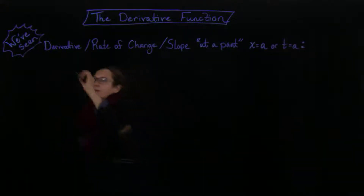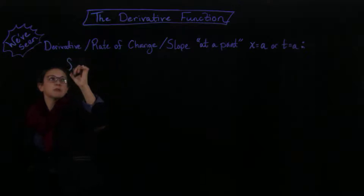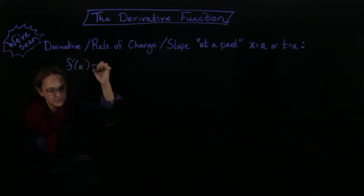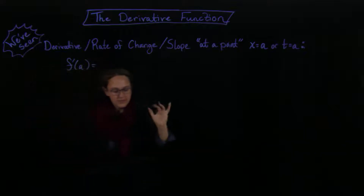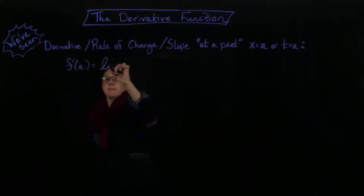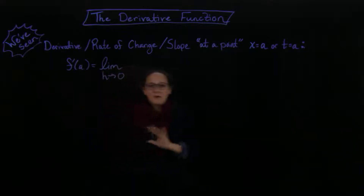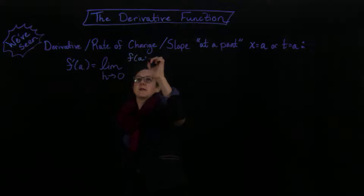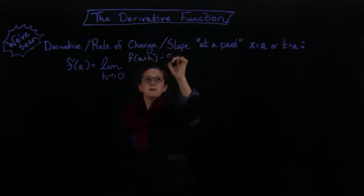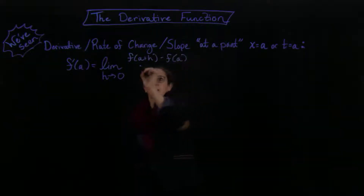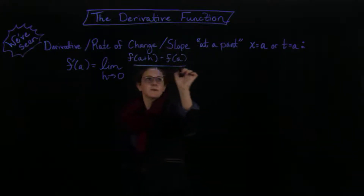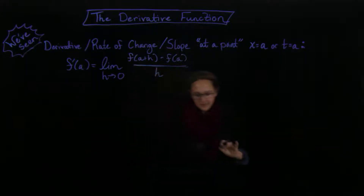And the way that we did that was: f prime of a is going to equal — that's just our notation — the limit as h goes to zero of f of a plus h minus f of a, all divided by h. So this is this limit, and there are all kinds of ways to compute it.